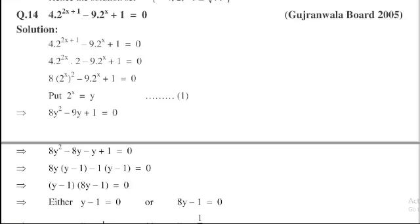So, 4·2^(2x+1) can also be written in the form of 2^(2x)·2. That is 4·2·2^(2x) = 8·2^(2x).